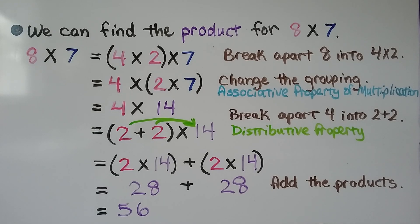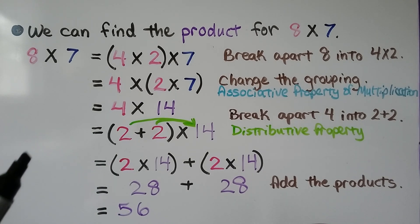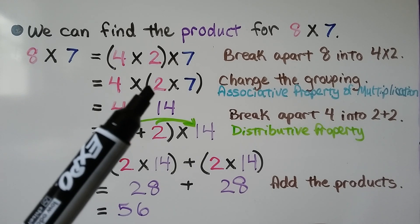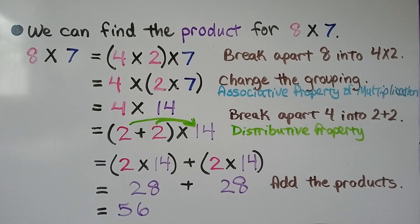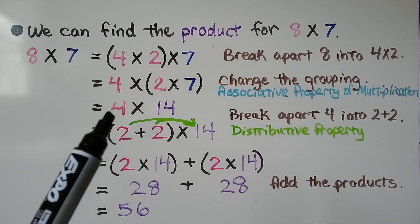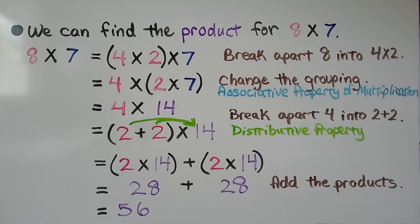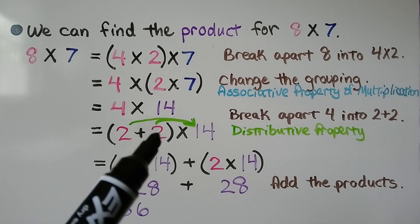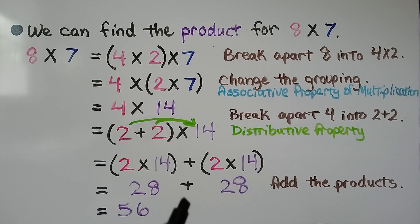We can find the product for 8 times 7. We can break apart the 8 into a 4 times 2, so we have 4 times 2 times 7. We can change the grouping with the associative property and put the parentheses around the 2 and the 7, and multiply them together first to get 14. Now we have 4 times 14. We can break this 4 apart into a 2 plus 2, giving us 2 plus 2 times 14. We distribute: 2 times 14 plus 2 times 14, which equals 28 plus 28, giving us 56.